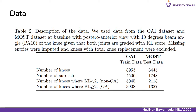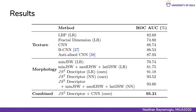We used two different datasets: data from the Osteoarthritis Initiative and the Multicentric Osteoarthritis Study. We trained our models on OAI and validated on MOST — the numbers are shown in the table. We used several reference methods to compare our approach. For texture analysis, we employed local binary patterns, fractal dimension, bilinear CNN, and anti-aliased CNN. For shape-based analysis, we compared minimum joint space width and joint space width measurements at fixed locations. We present the area under the receiver operating characteristic curves, ROC AUC, to measure classifier performance.